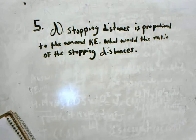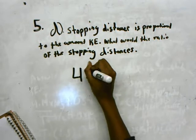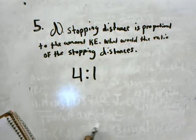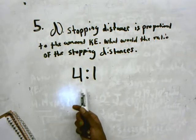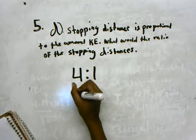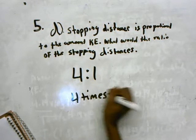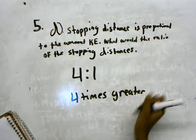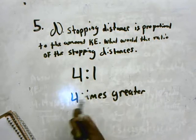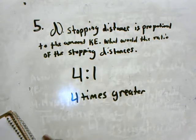Okay, for 5D, stopping distance is proportional to the amount of kinetic energy. What would the ratio of the stopping distance be? So before, we said that the ratio was 4 to 1, so that basically means that the stopping distance when the energy doubled will be four times greater than the stopping distance of the first car, the rollercoaster when it's moving at a speed of 18.3.